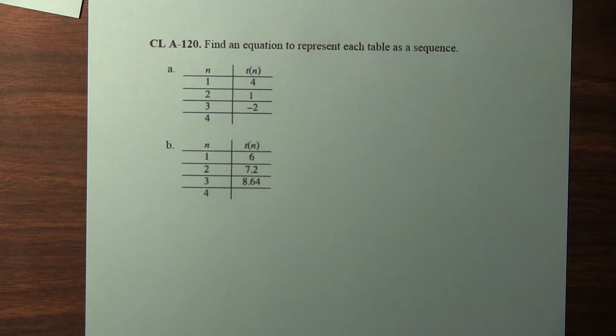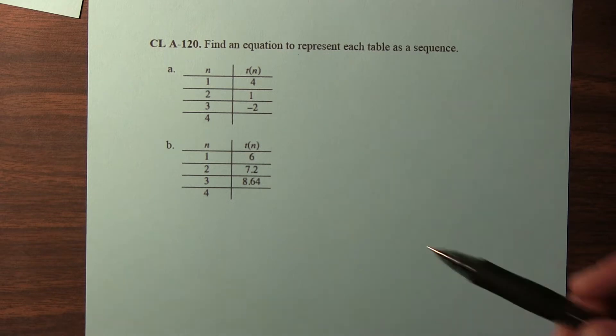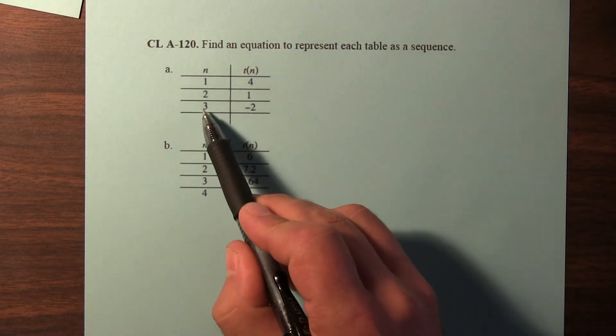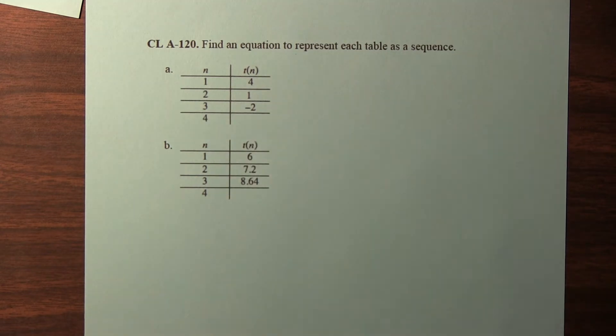In this problem, we're asked to find an equation to represent each table as a sequence. So in these tables, n represents what term number it is. For example, the third term is negative 2.